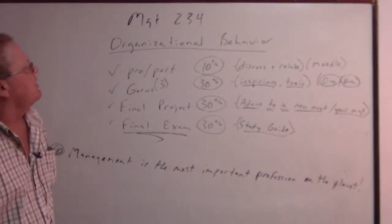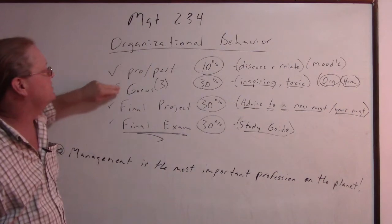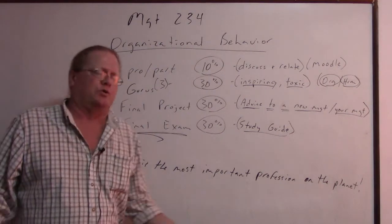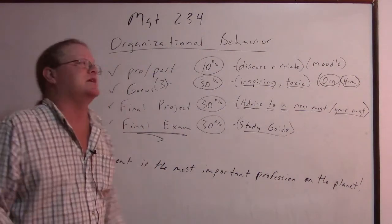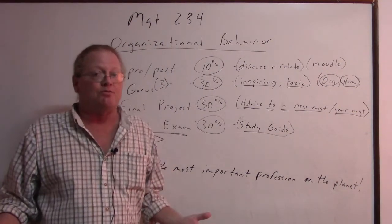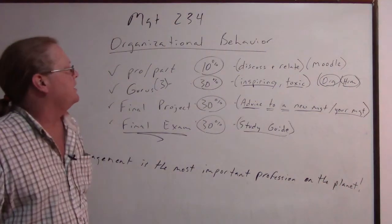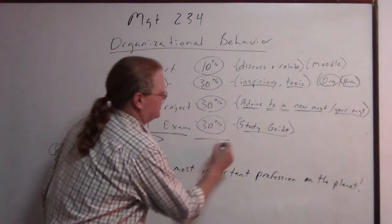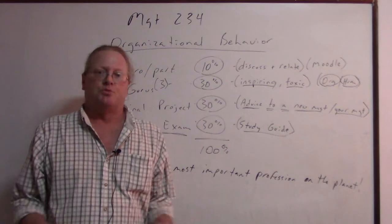So one more time - got the Moodle stuff, turning things on time, 10%. Gurus, we'll pick three - I think we can do that. You don't have to write a book on each one. Final project and final exam. Now I would like to apologize for these big numbers - those are big, big scary numbers - but we only have five weeks, so what else are you going to do? So anyway, do your best on those and we'll see what happens. That's 30, 60, 90, 100. Good. Okay, well, I hope you enjoyed the videos, the articles, and the Moodle discussions.